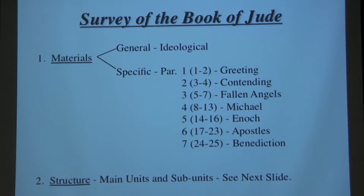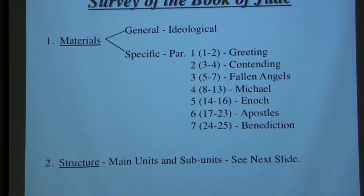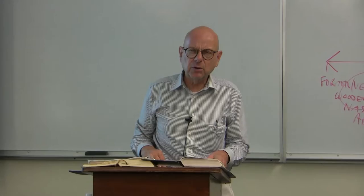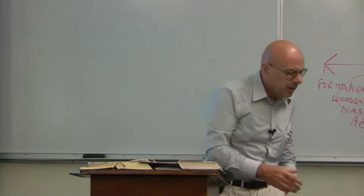In terms of main units and subunits, we want to make these units and subunits as broad as the material allows. In book survey, you want to avoid getting bogged down in details, because the more you focus on details, the less able you are to focus on the broader overarching movement of the book. You want to stand back and get a sense of the broad overarching movement, which translates into making your units and subunits as broad as the material allows.